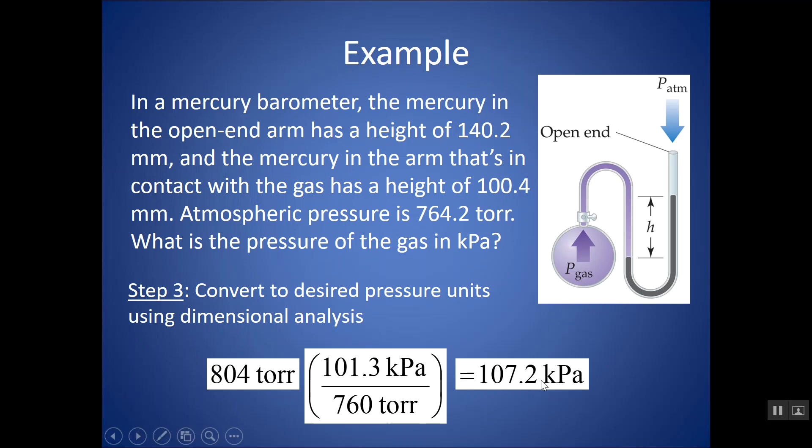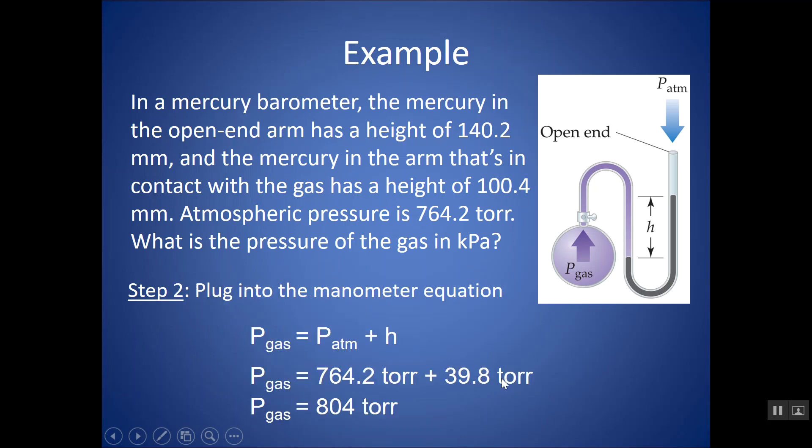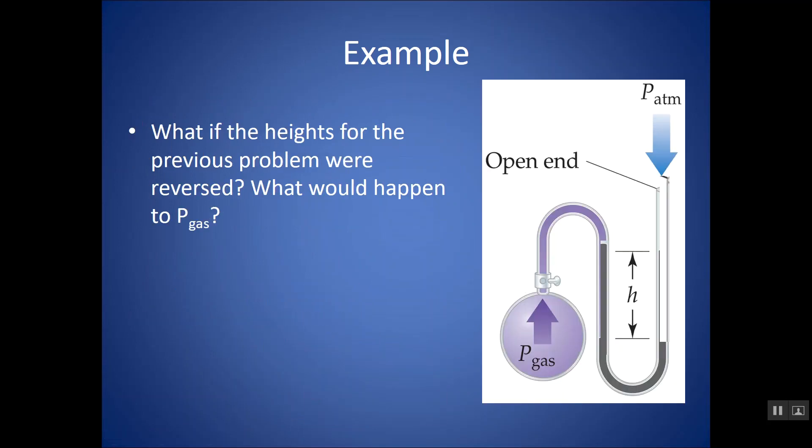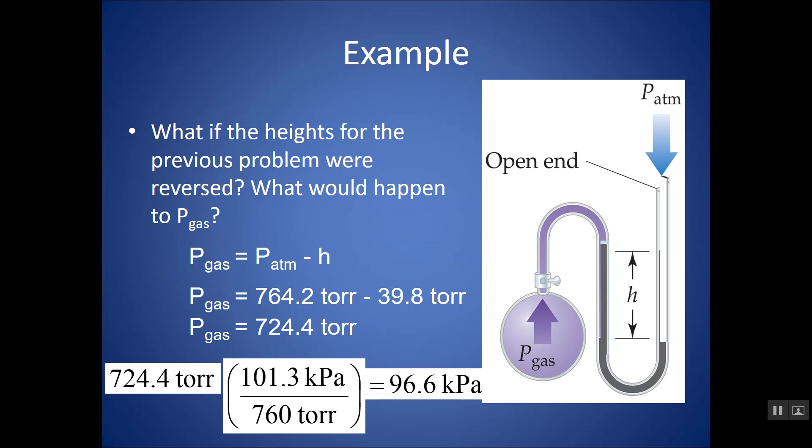Again, notice that my pressure of the gas, let's just check if this makes sense. If I look at it in torr, my pressure of the gas is 804. Should it be higher than the pressure of the atmosphere? Yeah, it should because the gas is pressing harder. So it makes sense that I added the height. Take a moment and try this example doing the same information, but notice that the picture is reversed. And then pause the video and check your work. So if this were the case, the atmospheric pressure is pressing harder. So rather than adding h when finding pressure of the gas, I want to subtract the height. And I would get 724.4 torr, and if I turn that to kPa, I get 96.6 kPa. A lower pressure than that of the atmosphere, which makes sense according to this diagram.